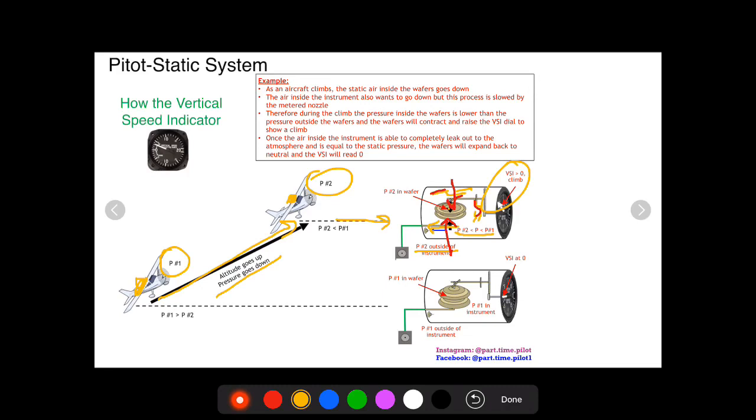Now, if you were to then level out at this altitude and pressure, eventually all the air, once you allow the time, all the air inside of here would exit out of the metered hole and it would stabilize to pressure two. And once it was the same, you'd have pressure two inside the wafer, pressure two outside, it would no longer be contracting the wafer. And this dial will go back down to zero and show VSI of zero once you've stabilized. So because of this metered port, it basically makes the pressure in here lag behind the pressure inside the wafer. And that is how it gives you a vertical speed indication.